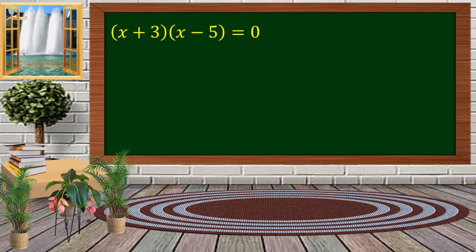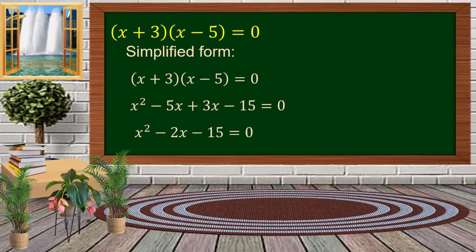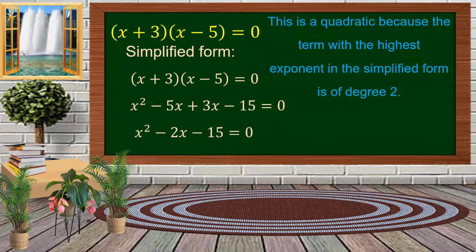How about this one? Again, we have to simplify this equation. Simplifying the left side, we apply the FOIL method and get x squared minus 2x minus 15 equal to 0. This is a quadratic equation because the highest exponent is 2.